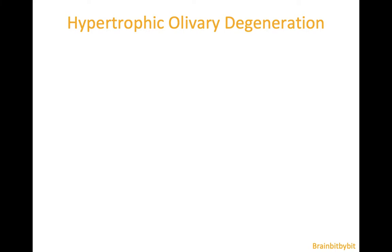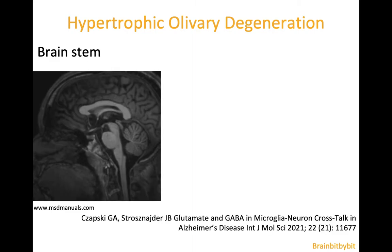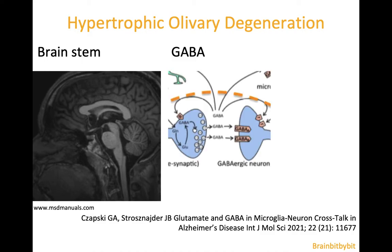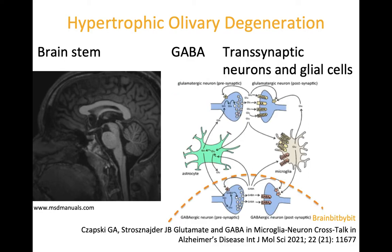Welcome to this first content-related Brain Bit by Bit, in which I will show images of hypertrophic olivary degeneration. This is a form of transynaptic degeneration that is unique not only because of the hypertrophy, but it can also illustrate the anatomy of the brainstem, touch on neurotransmitters, and show involvement of not only neurons but also glial cells in later stages.